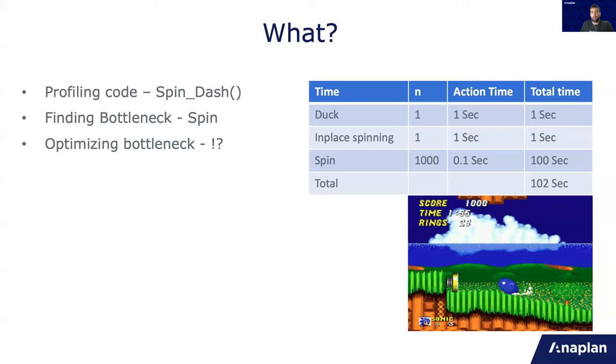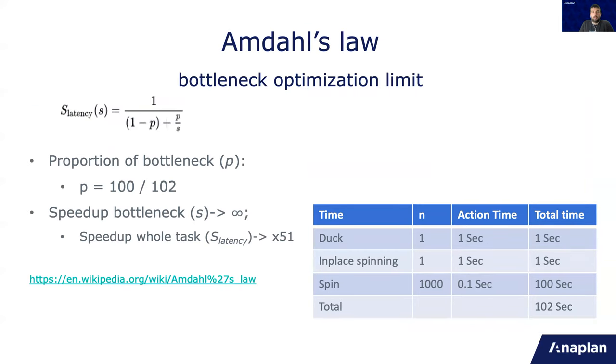So what should we do with the bottleneck? So here comes Amdahl's Law, which basically says the relation between the speedup of the bottleneck to the speedup of the whole process. So for example here, p is the proportion of the bottleneck from the total time. So it is 100 divided by 102 seconds, which is 51. And when speedup goes to infinity, the speedup of the bottleneck goes to infinity, the speedup of the whole task goes to 51.